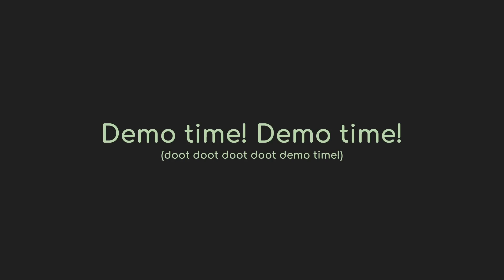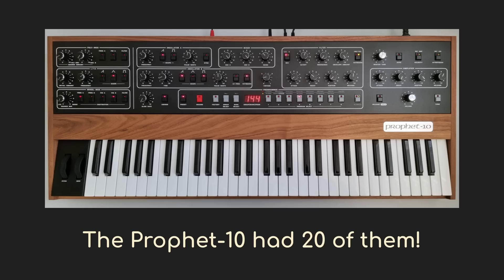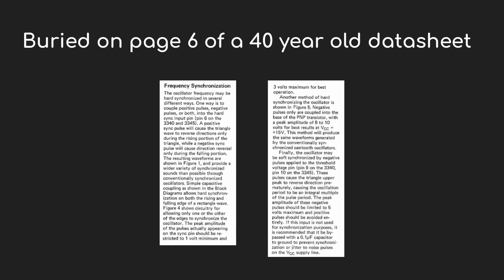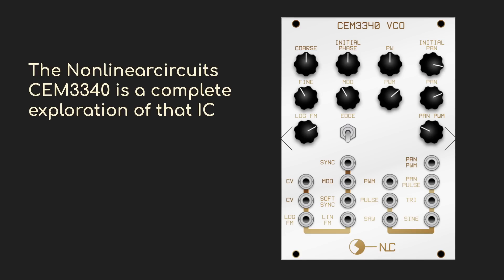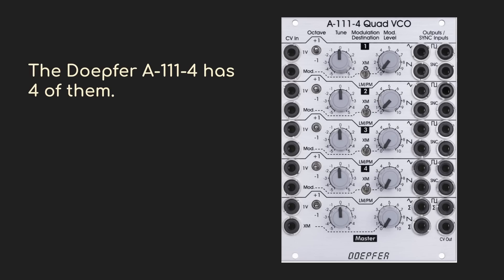I want to point out that the VCOs I'm using here are based around the Curtis 3340 analog oscillator chip. It and its modern replicas have been at the heart of both keyboard and modular synths for decades. That ubiquity is part of why I chose it, but it also has more documented detail about how it works than any other oscillator design I could find. I've got two modules here: the Non-Linear Circuits CEM 3340 — basically just a modular interface into the core functionality — and the Doepfer A-111-4 Quad VCO, which packs four oscillators each based around its own 3340.